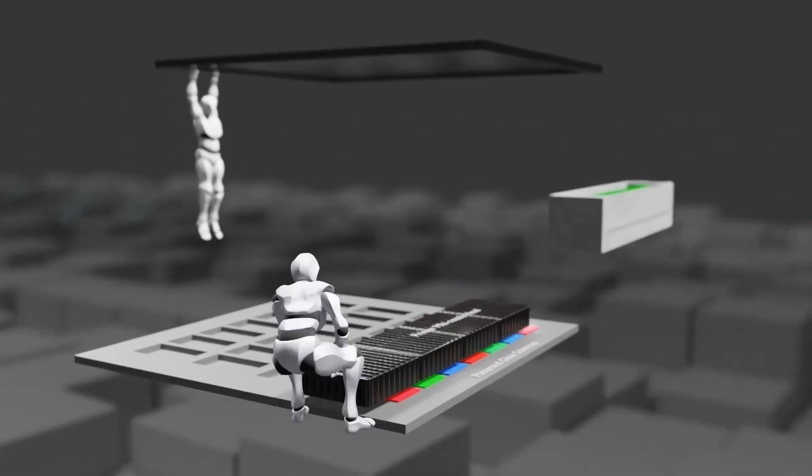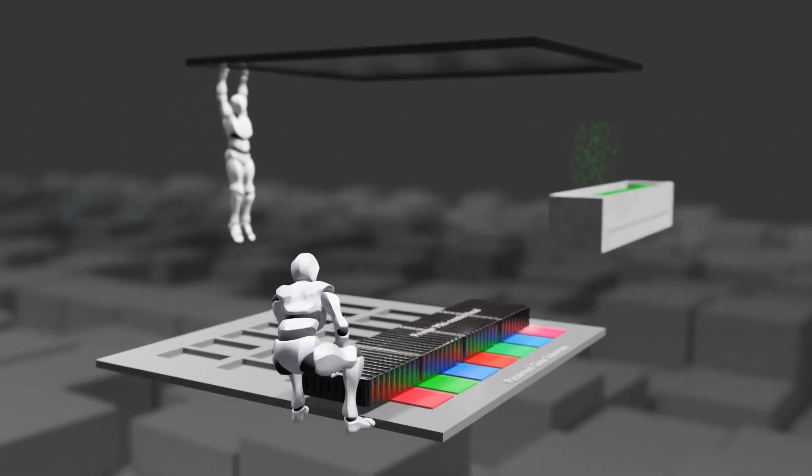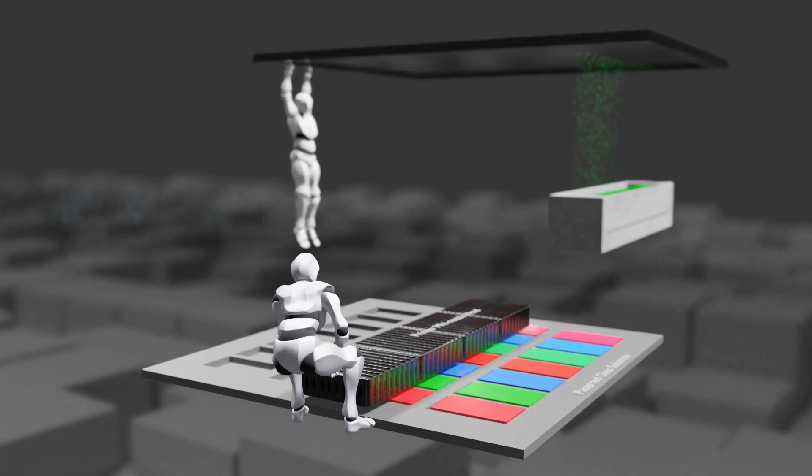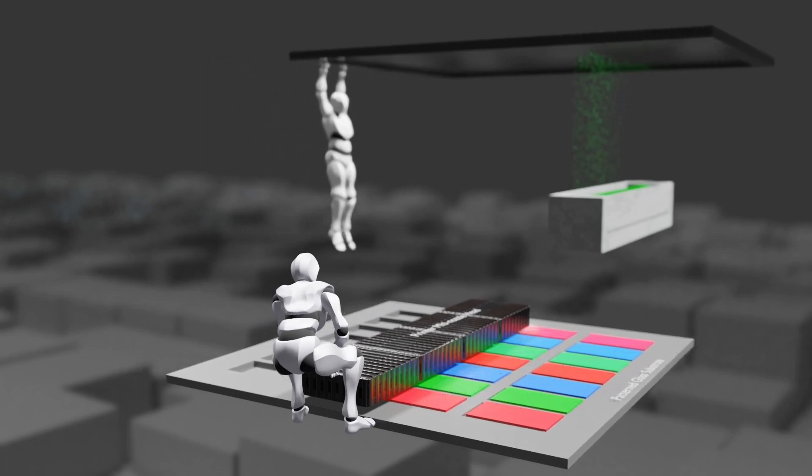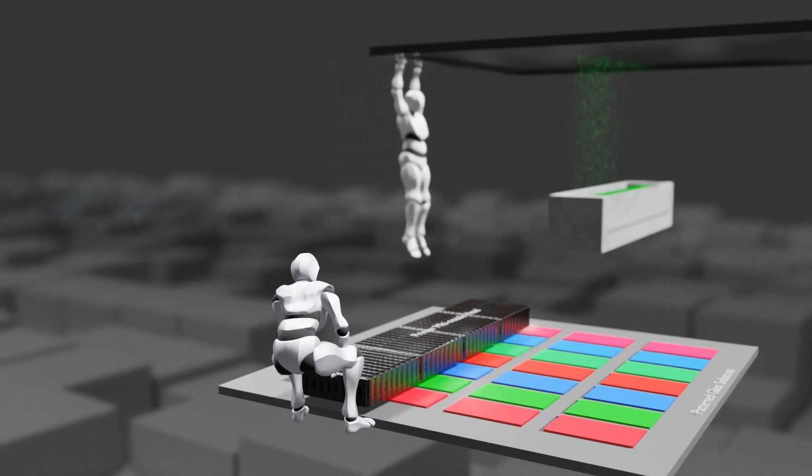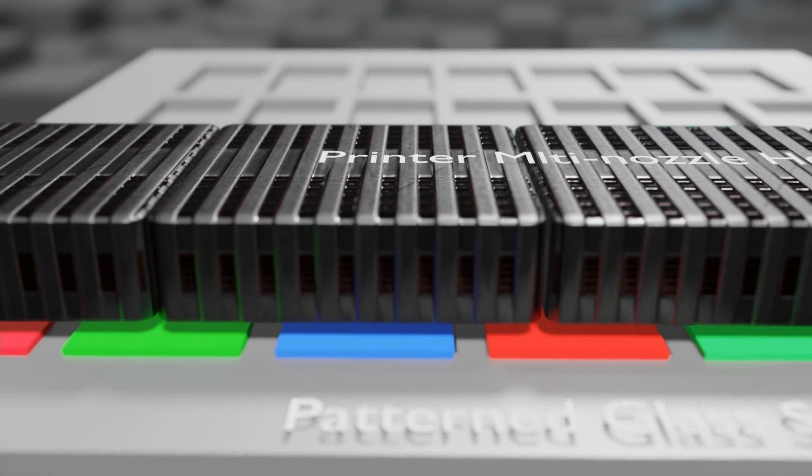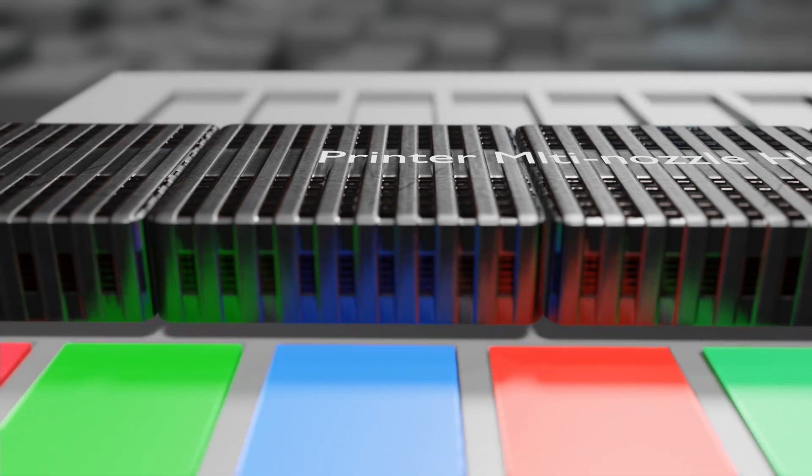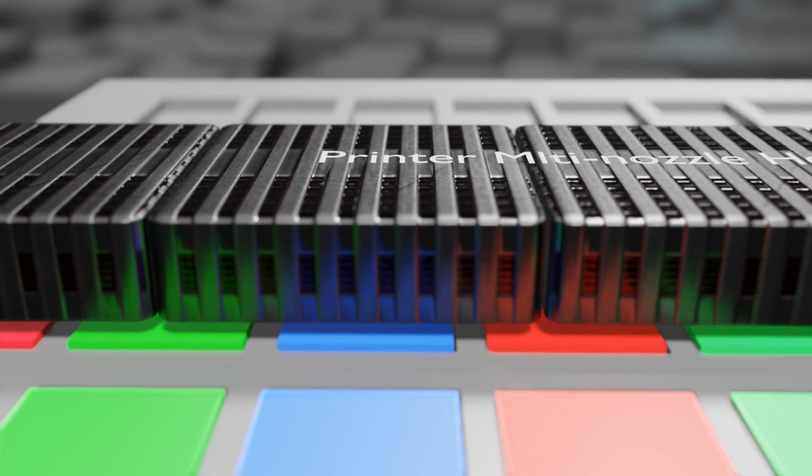Since the method of injecting liquid ink containing OLED material into a designated pixel is used, the size of the substrate is relatively free to expand compared to the method of placing the substrate on the upper part of the equipment and depositing the OLED material from the bottom. In addition, unlike the vacuum deposition process, ink is injected only at the designated location, so the consumption of materials is low.